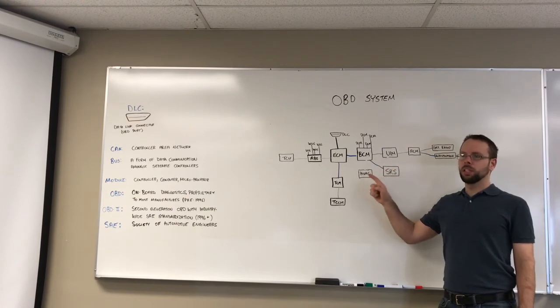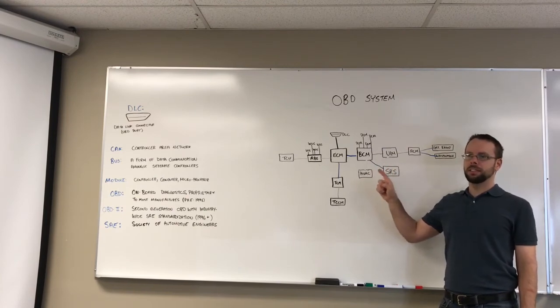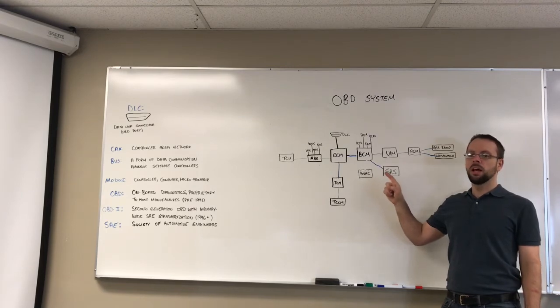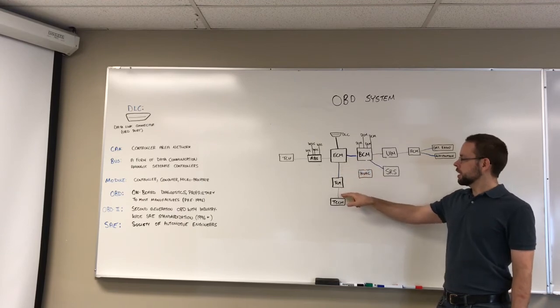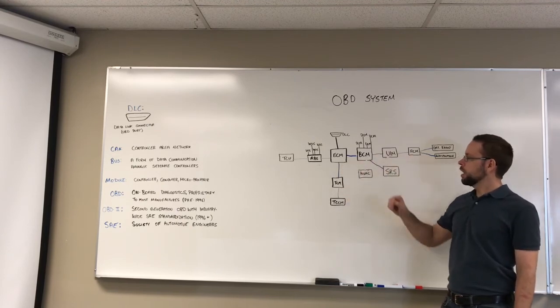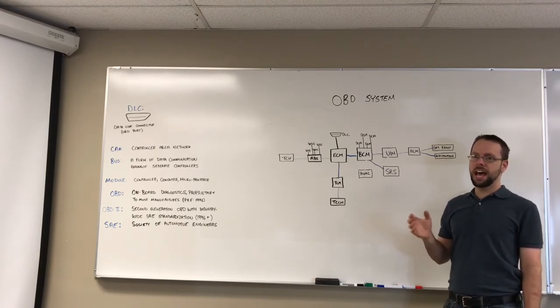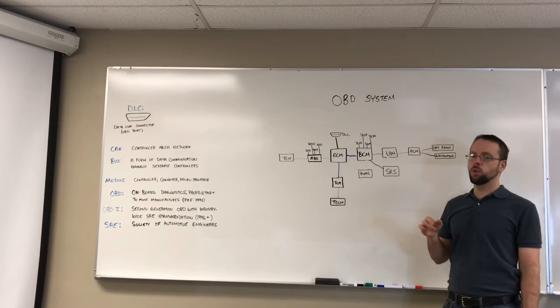So the CAN bus system will utilize on modern vehicles the ISO 15765-4 system of signaling and communication and that is these lines here that communicate between all of these modules. It is a very high-tech system that utilizes digital communication for very fast and simplistic communication that doesn't require a lot of wires.